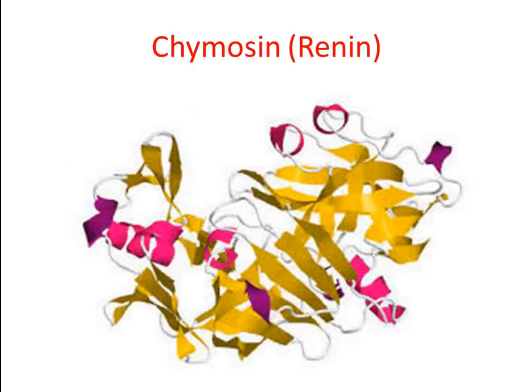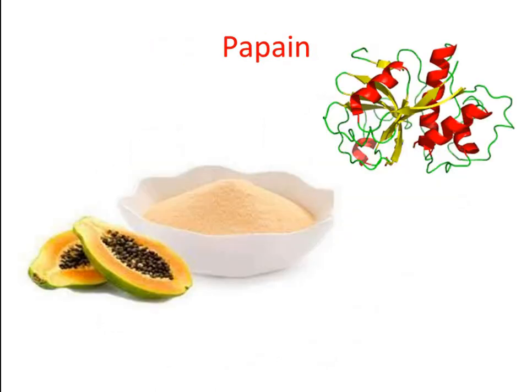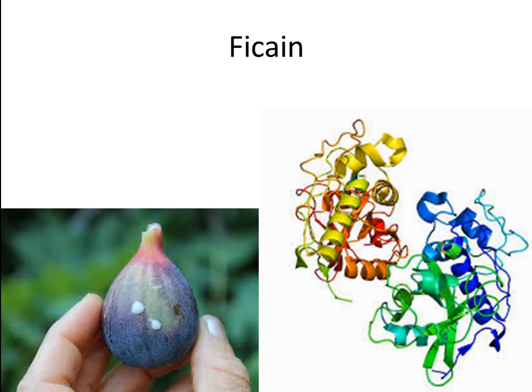Another acid protease found in the stomach is chymosin, often referred to as rennin. Other acid proteases are found in microorganisms. A group of thiol proteases, similar in structure to each other, are found in plants. These include papain, ficin, and many related enzymes. Papain is obtained from papaya fruit and has been used in meat tenderization by enzymatic methods since ancient times. Ficin, obtained from figs, is also a thiol protease. Other thiol proteases of different structure are found in bacteria and mammalian lysosomes. The essential cysteine residue in each of these enzymes plays a similar role to that of serine in serine proteases.